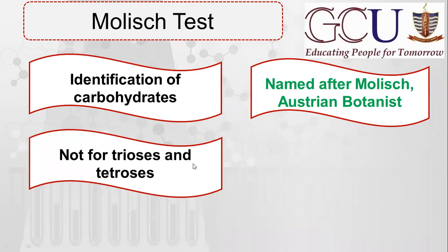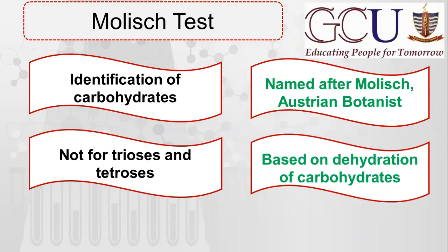Trioses और tetroses के अलावा सारे carbohydrates के लिए यह test यूज़ करते हैं. Trioses और tetroses में furfural नहीं बनता है इसलिए यूज़ नहीं करते. यह test based है dehydration of carbohydrates पर — sulfuric acid बहुत अच्छा dehydrating agent है जो carbohydrate को dehydrate कर देता है.